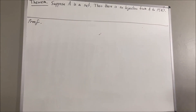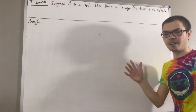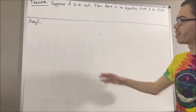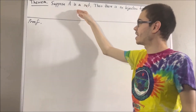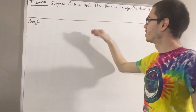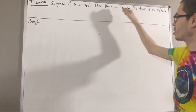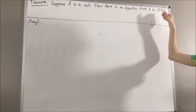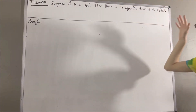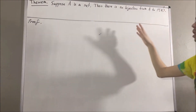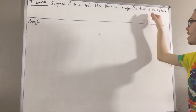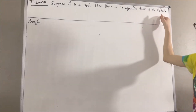Hello! In this video, we are going through the following theorem: suppose A is a set. Then there is no bijection from A to the power set of A. In fact, we're going to show that there is no surjection from A to the power set of A.